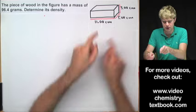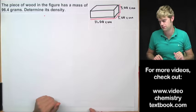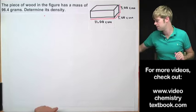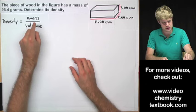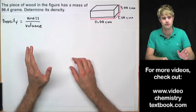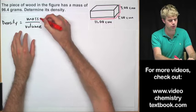The piece of wood in the figure, that's this right here, has a mass of 96.4 grams. Determine its density. So we're going to be looking for density. That means we need two things: we're going to take the mass and divide it by the volume. The problem right here gives us the mass, it's 96.4 grams.